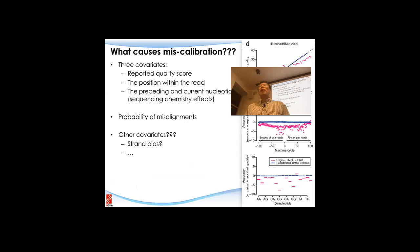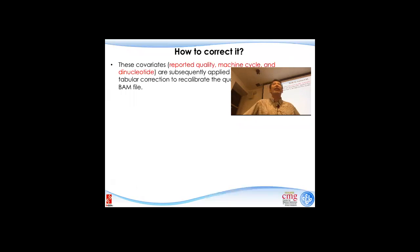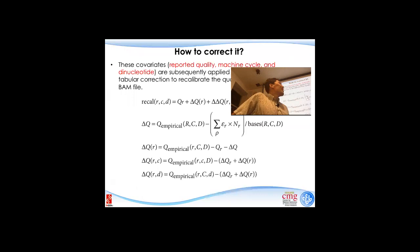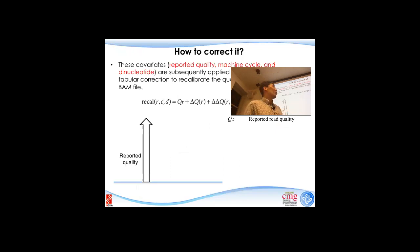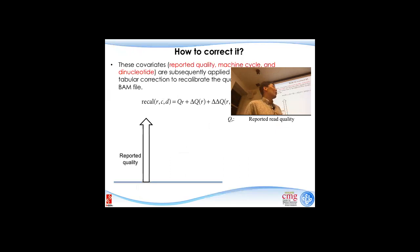Now we see this problem. How to correct it? What they propose in this publication — you can read this — is to look at three covariates and use this equation. I know that when you put up equations it triggers some allergic effect on some people, so I'm trying to make this simple. Let me go back to a cartoon I made. This is your original reported quality for one sequencing read. So how to do the recalibration?